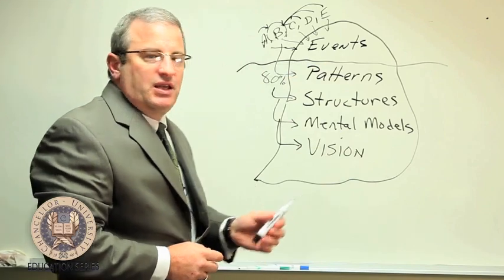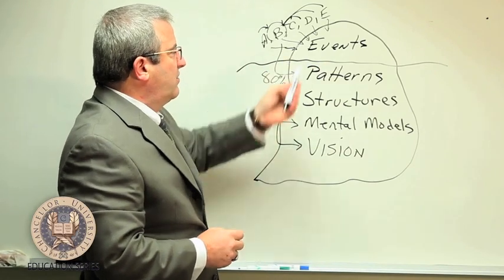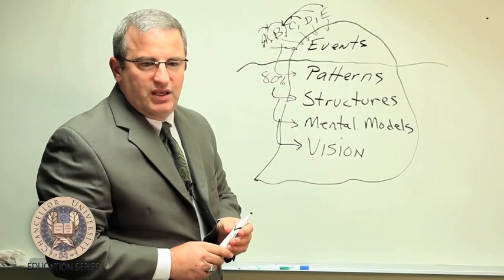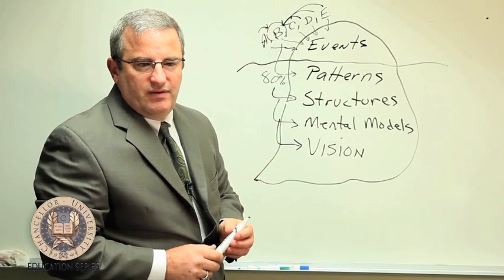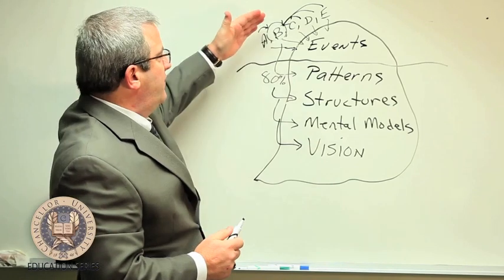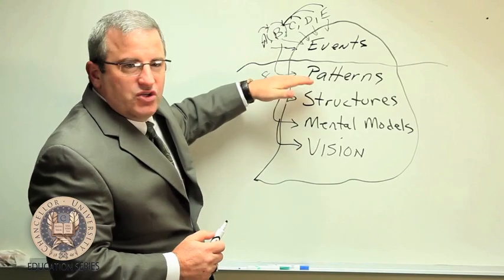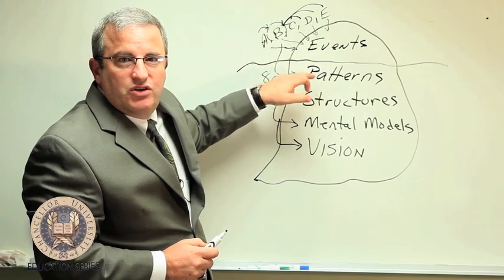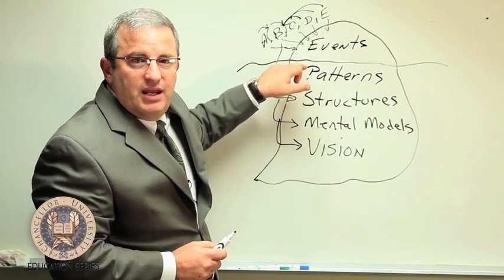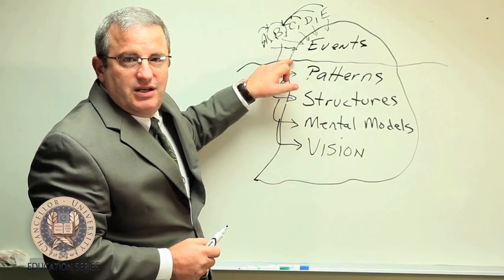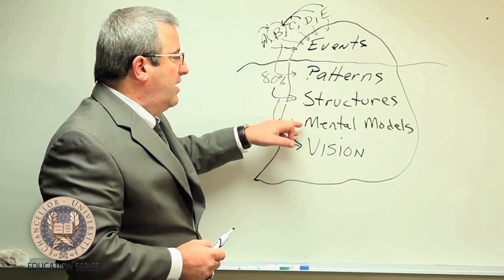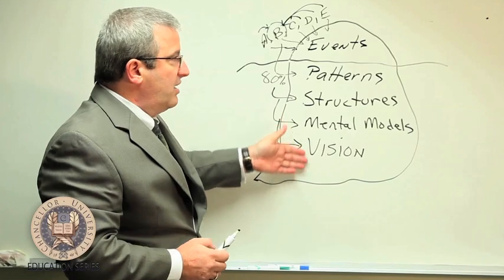So basic systems thinking model, the iceberg, you probably heard it quite a bit, but the fire station example hopefully gives you a visual of how systems thinking is working. If this fire chief only addressed at the pattern level, you could put all the resources you wanted into it, but you're never going to change the fact that 80% of those fires are happening in this station. You have to dig deeper and get down into the structural level and then ultimately do the mental model and vision element.